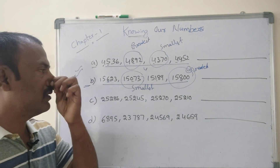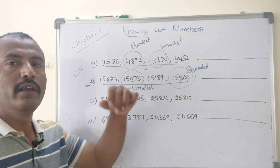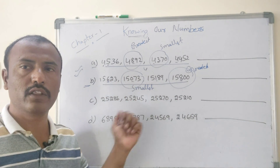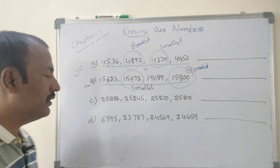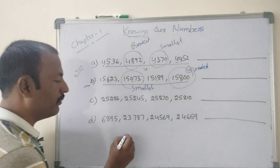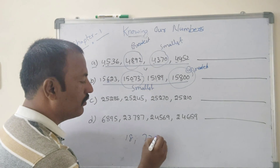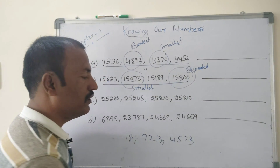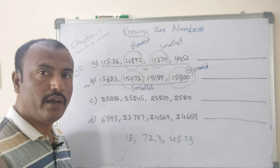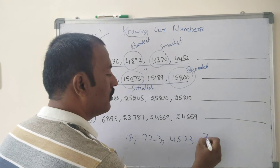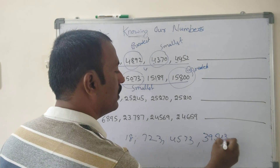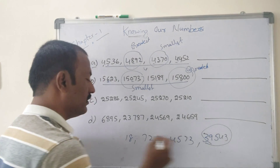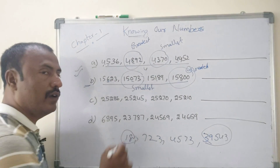Now we compare with each series. Before, in a previous series, for example: 18, 723, 415, 4173, 39543 — you can easily find out this is the greatest number and this is the smallest number.